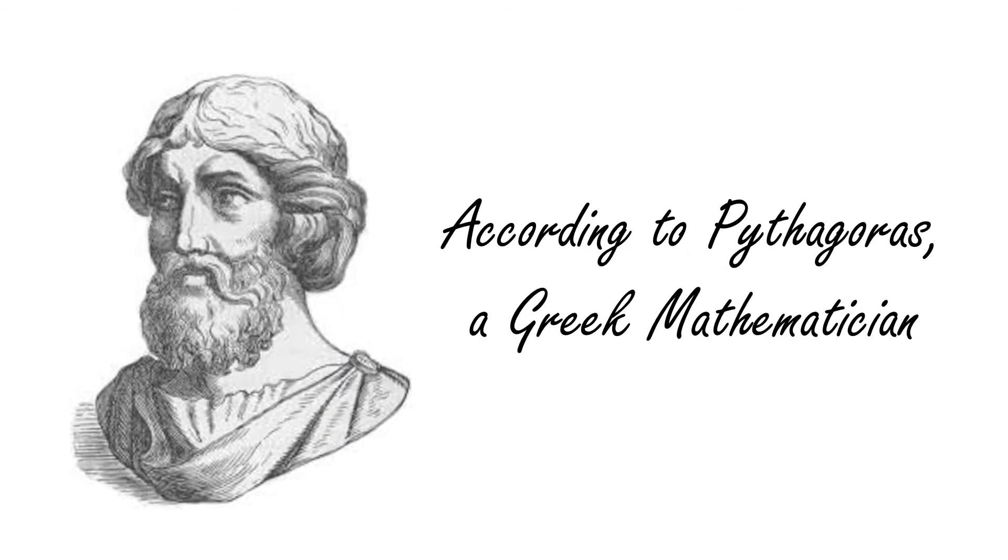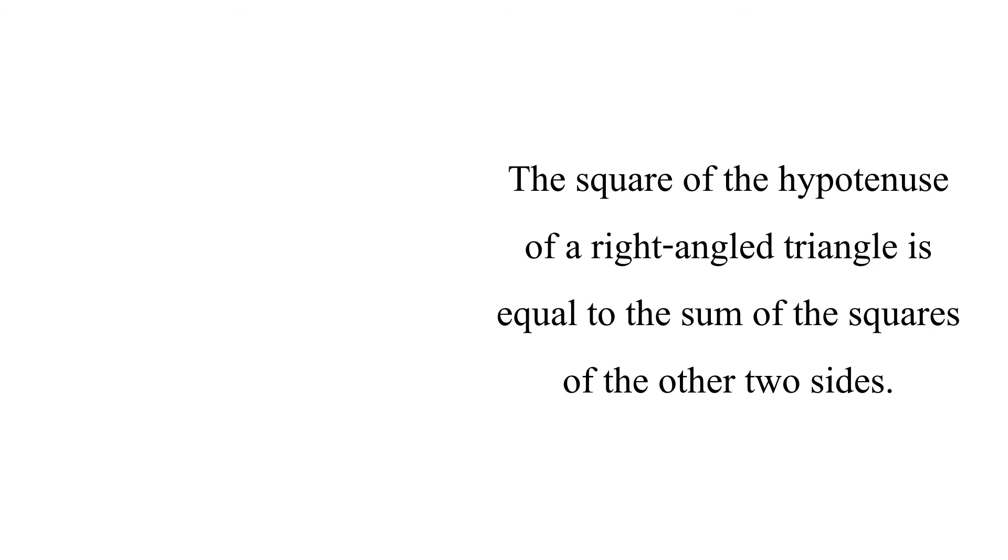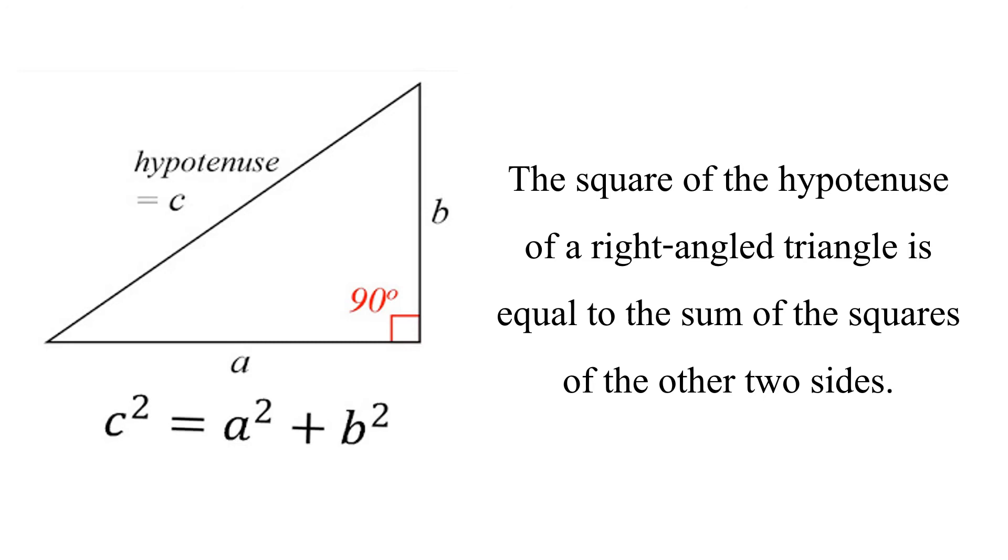According to Pythagoras, a Greek mathematician, the square of the hypotenuse of a right-angled triangle is equal to the sum of the squares of the other two sides, which means C square is equal to A square plus B square.